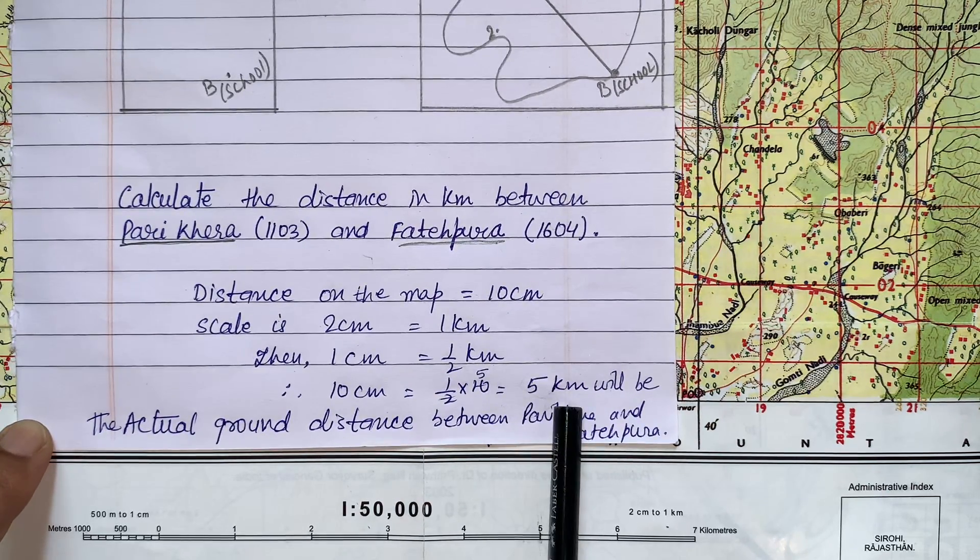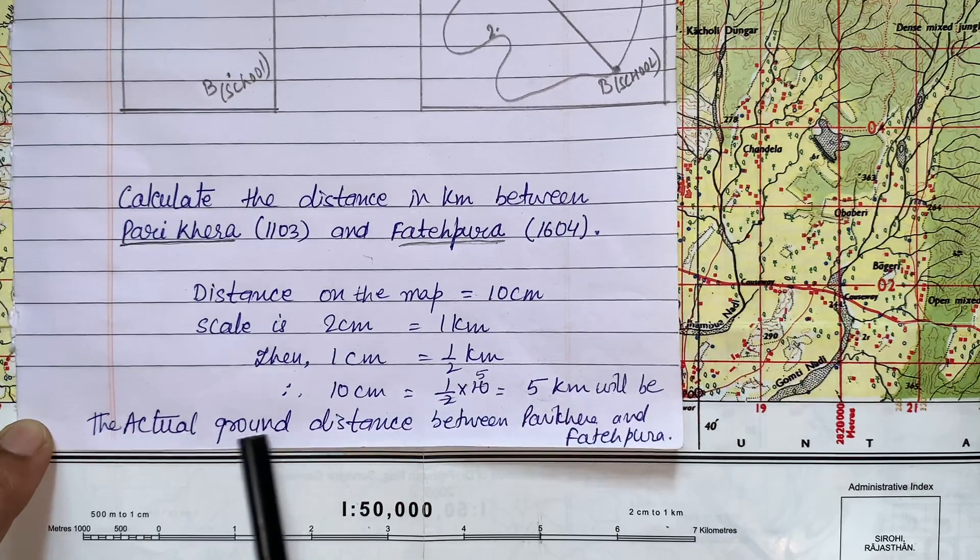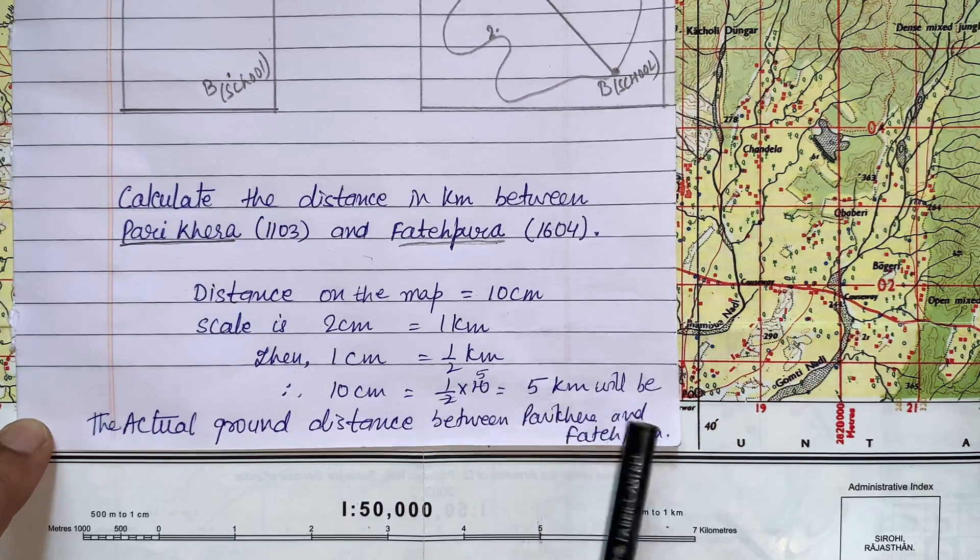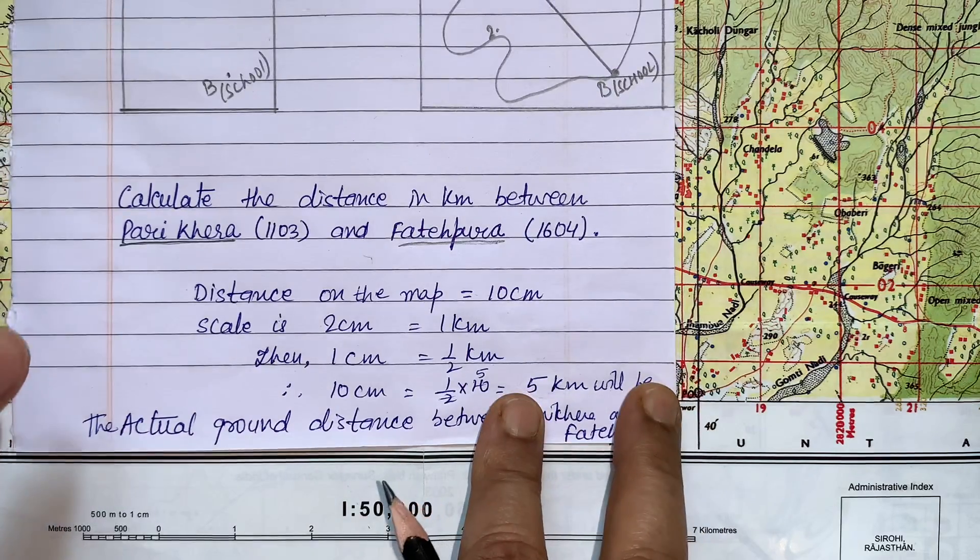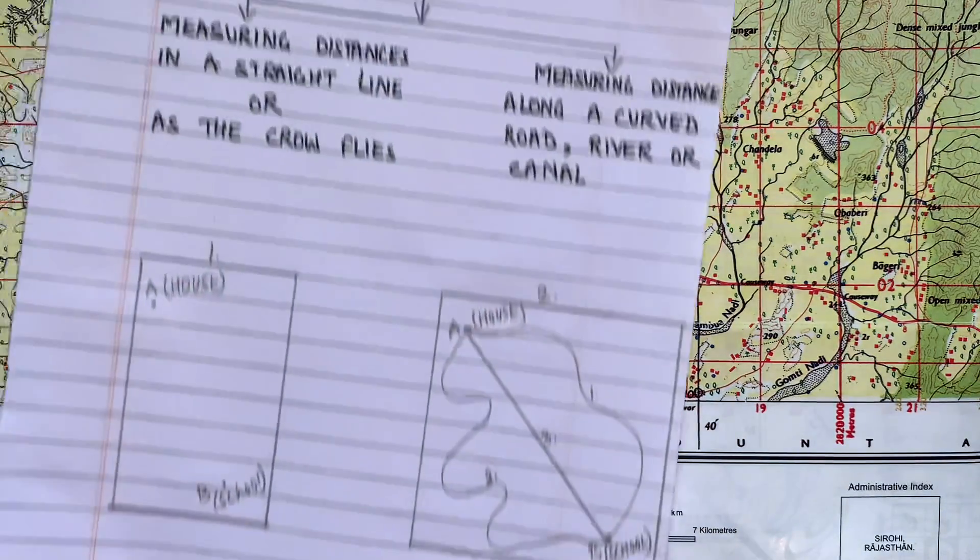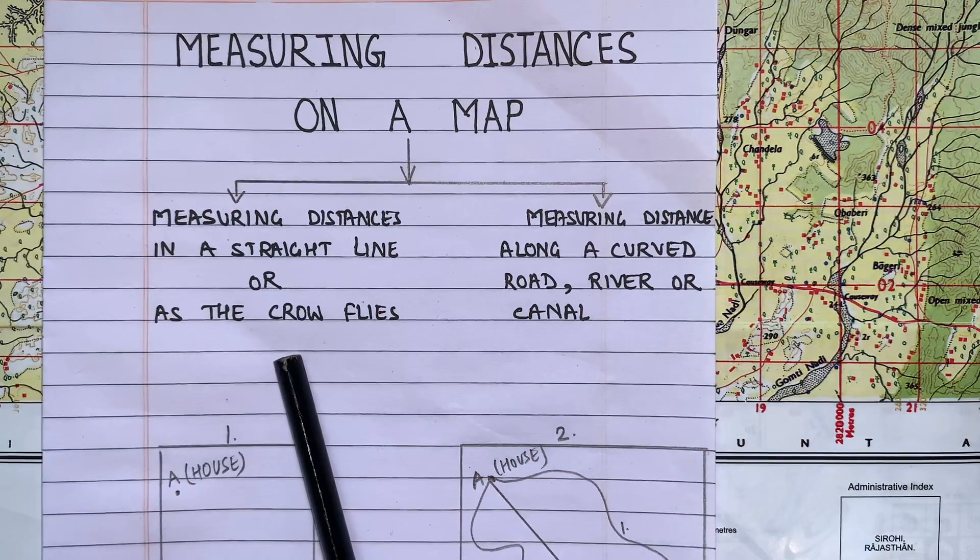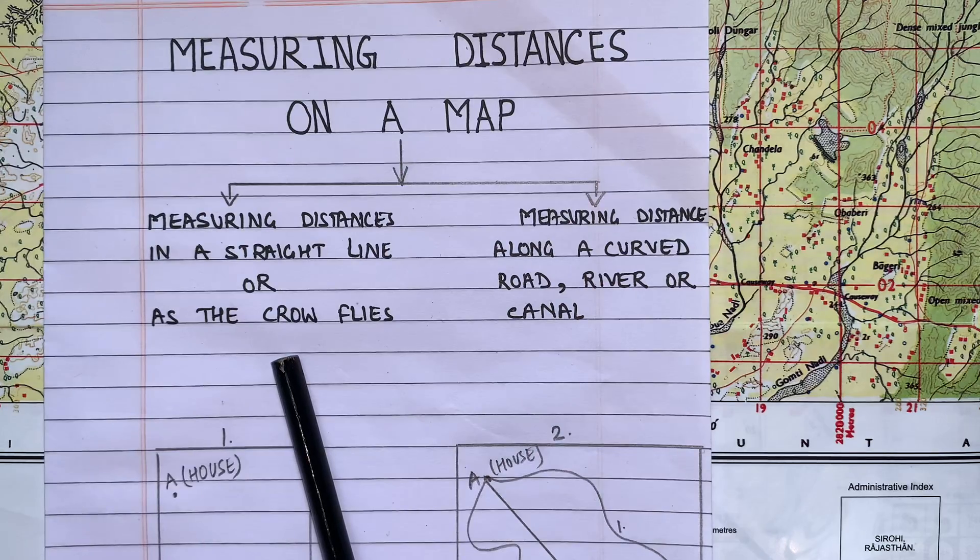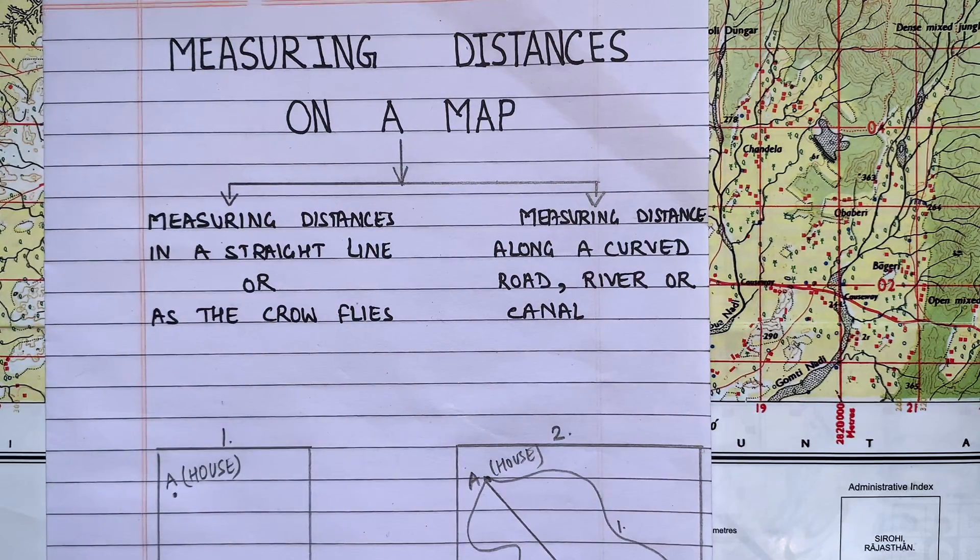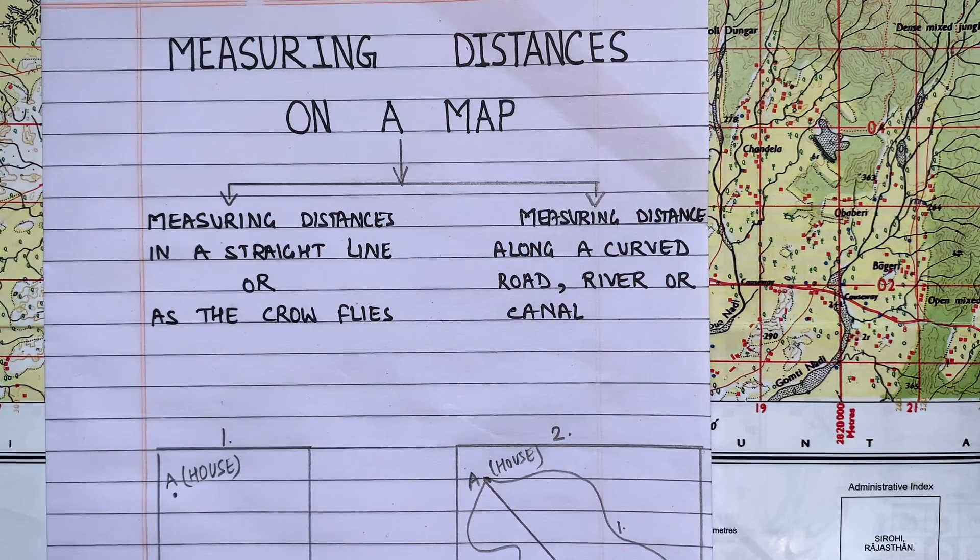From here one centimeter will be half kilometer. Therefore ten centimeters will be five kilometers. Thus this five kilometers is our answer. This will be the actual ground distance between Parikhera and Fatehpura. I'm sure condition one of this measuring distance is clear to all of you.